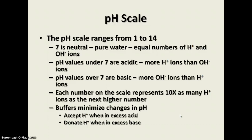There are compounds found in living things and other substances called buffers. Buffers are important because they minimize changes in pH. A big change in pH is going to be very harmful to cells, so buffers are really important. Cells have lots of natural buffers that occur all the time. A buffer accepts hydrogen ions when there is excess acid present to keep it from being harmful to the cell, and donates hydrogen ions when there is excess base — preventing a sharp, sudden change in pH.